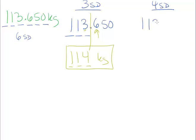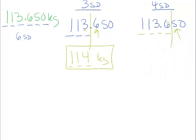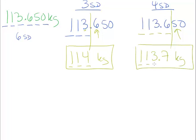Rounding 113.650 to four significant digits: we keep 1, 2, 3, 4 digits and place our barrier. The digit we focus on is 5, and since it equals five, the fourth digit rounds up. So our answer is 113.7 kilograms — that's 1, 2, 3, 4 significant digits.